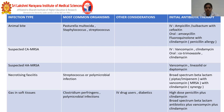In necrotizing fasciitis, Streptococcus or polymicrobial infections are most common; broad-spectrum beta-lactams with vancomycin and clindamycin are given. Gas and soft tissue infections usually involve Clostridium perfringens and polymicrobial organisms, typically seen in diabetics and IV drug abusers who are immunocompromised. High-dose penicillin plus clindamycin, or broad-spectrum beta-lactams plus vancomycin plus clindamycin, is administered.